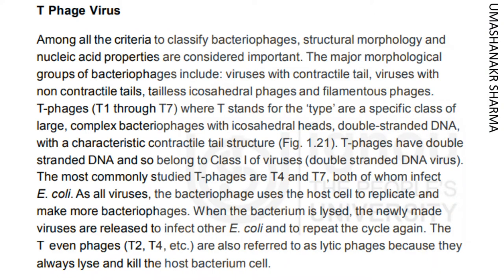T-phages, T1 through T7, where T stands for type, are a specific class of large, complex bacteriophages with icosahedral heads, double-stranded DNA, with a characteristic contractile tail structure. T-phages have double-stranded DNA and so belong to class I of viruses, the double-stranded DNA virus.